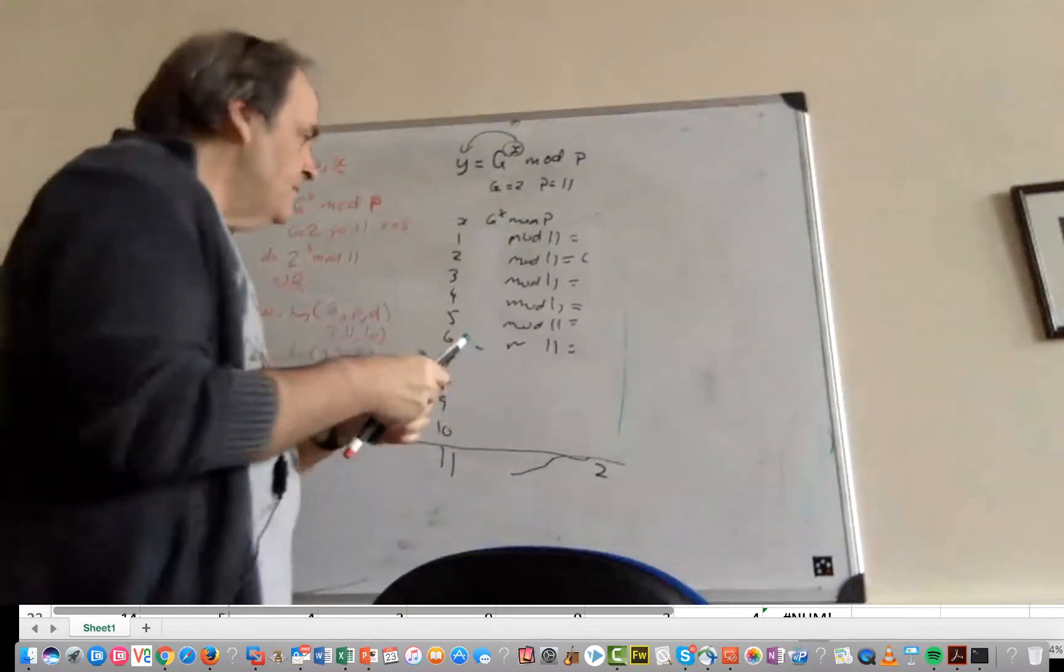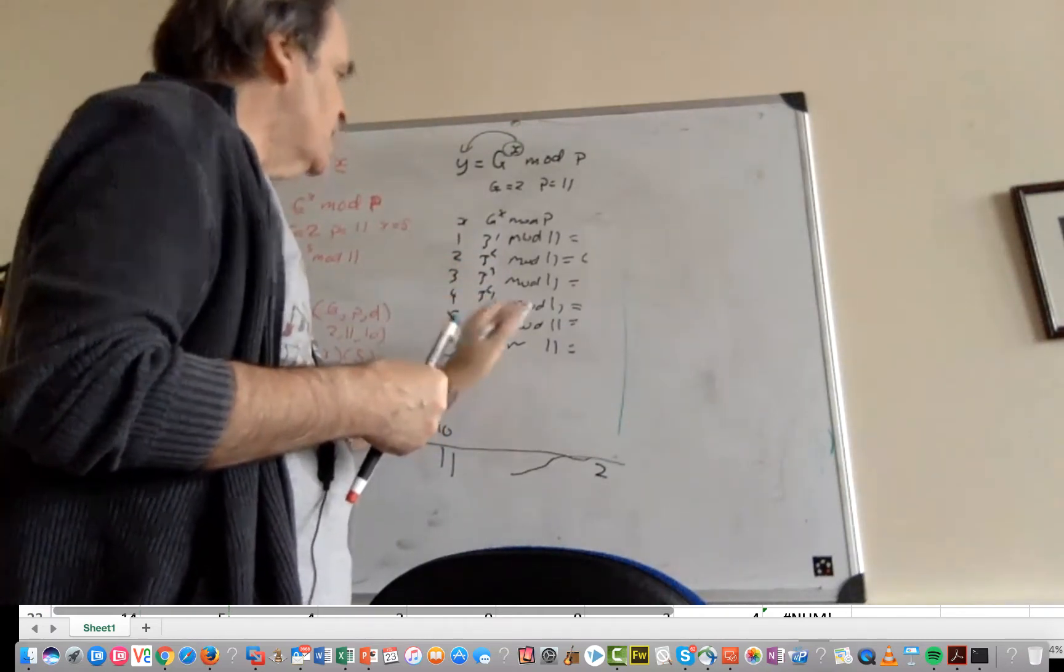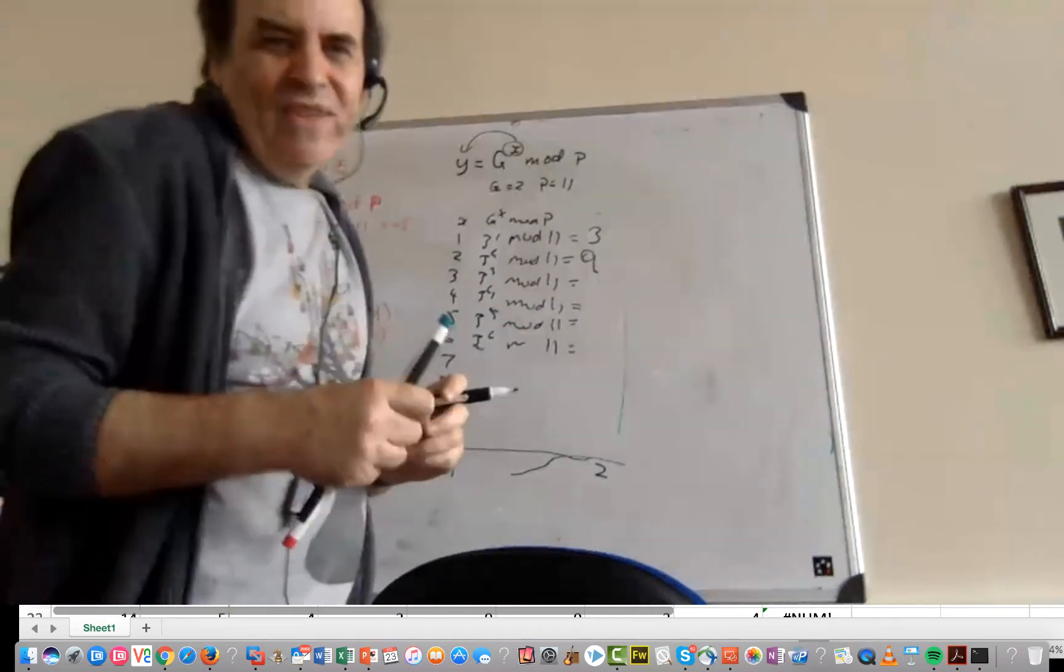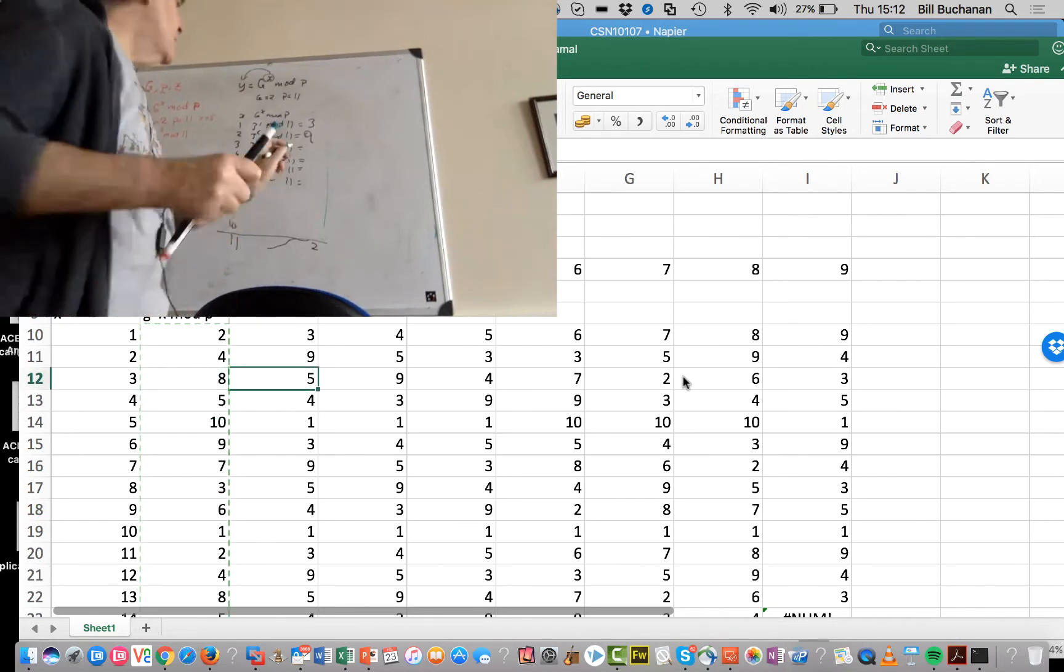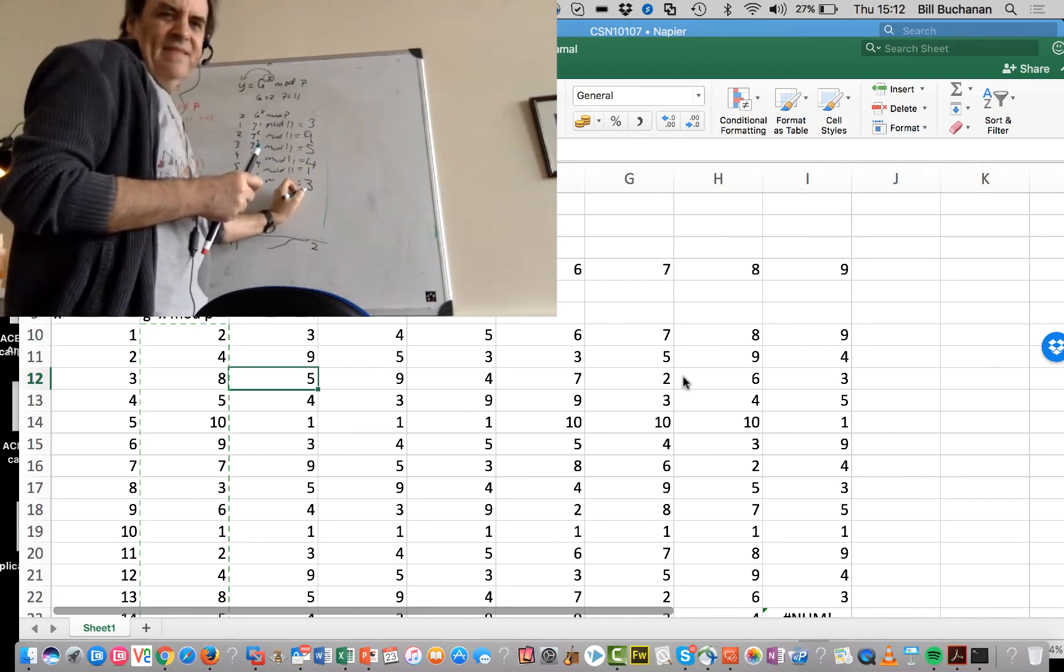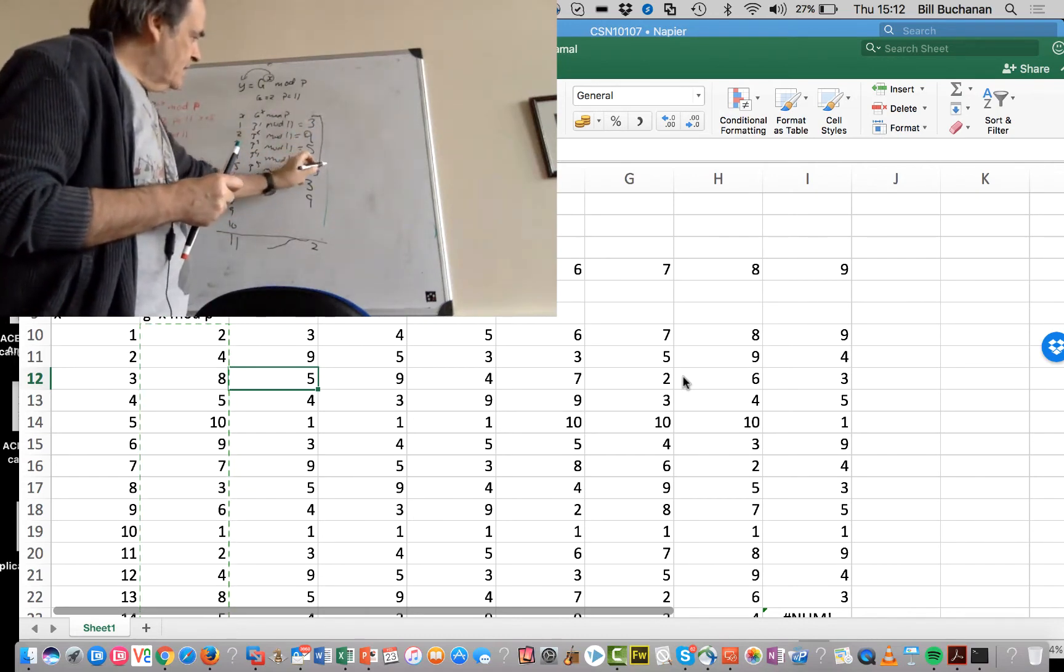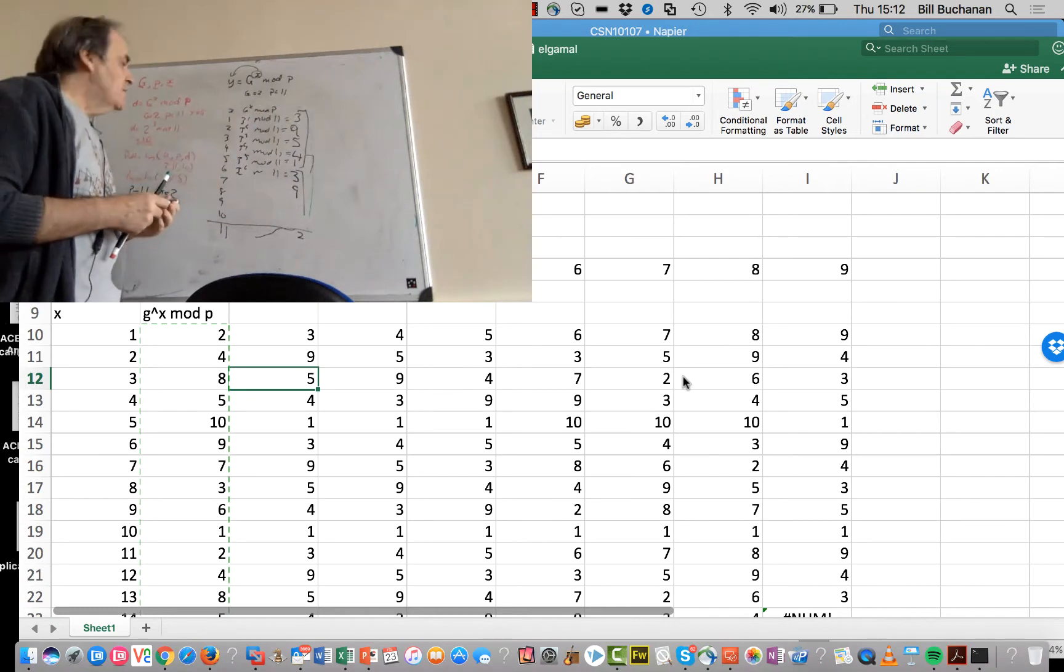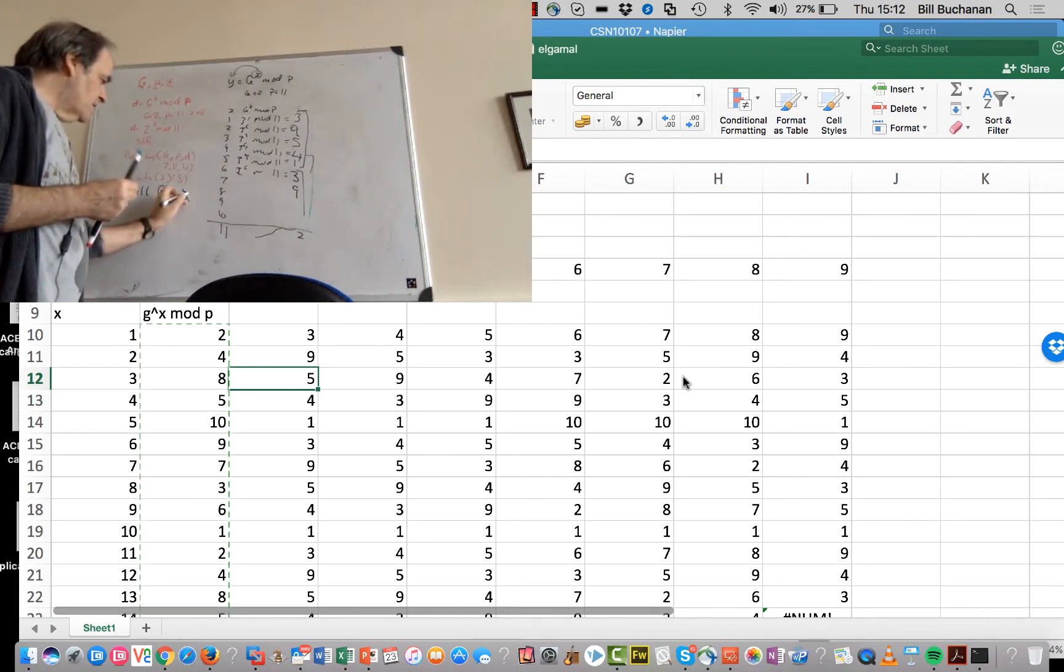We calculate 3 to the power of 1, 2, 3, 4, 5, 6 mod 11. That gives us 3, 9, 5, 4, 1, 3, 9... It's starting to repeat. We put in a value of 6 and got 3, we put in a value of 1 and got 3. This value of G won't work, so G equals 3 doesn't work.